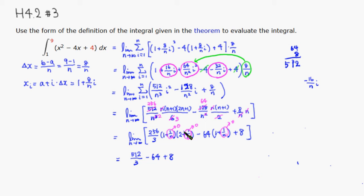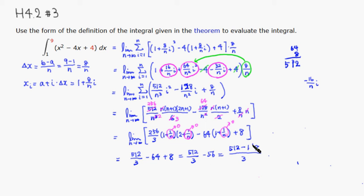So that equals 512/3 minus 56. Using a common denominator of 3: 3 × 56 = 168. Then 512 - 168 = 344, giving us 344/3. That's the value of the definite integral.